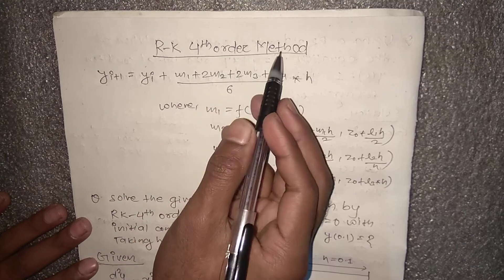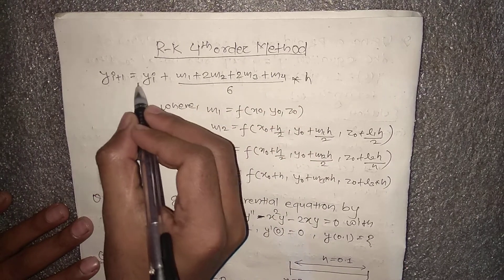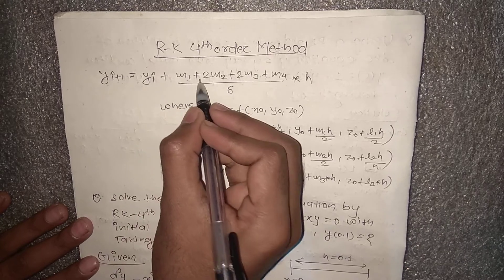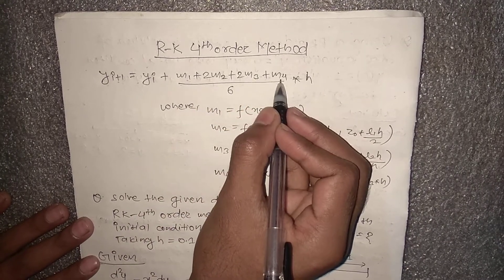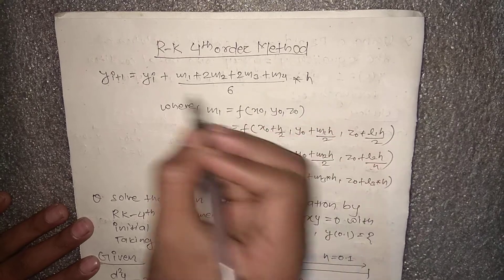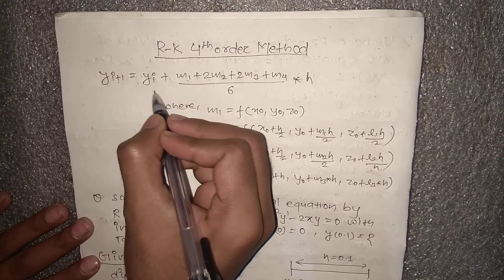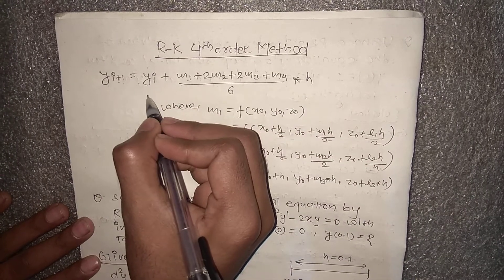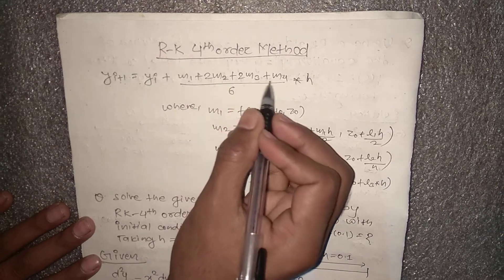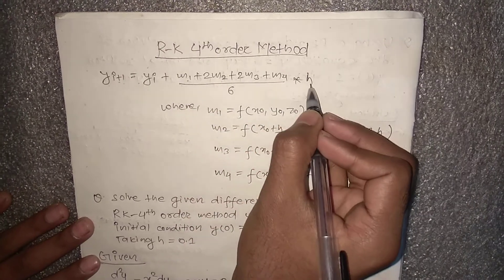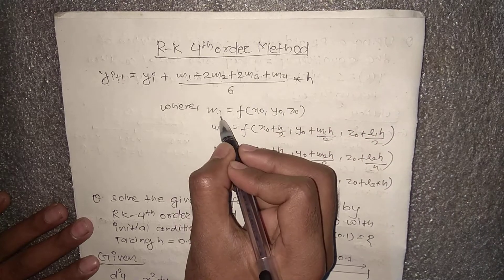Here we have the given formula for the RK4 method: y_(i+1) equals y_i plus (m1 plus 2*m2 plus 2*m3 plus m4) divided by 6, times h. Here y_(i+1) represents the new value, y_i the old value, m1 through m4 represent the slopes, and h represents the step size.